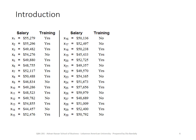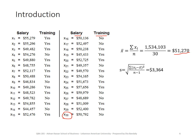This is the data collected for 30 managers — the salary and whether each manager undertook a training or not. It's easy for us to find the mean of these 30 managers: sum up their salaries and divide by 30, and we get $51,270 — pretty close to the population mean of $51,800. Remember, here we are assuming that we don't know mu. We can also get the standard deviation: summing the squared distances and dividing by n minus one (because this is a sample), then taking the square root. We get a standard deviation of $3,364.